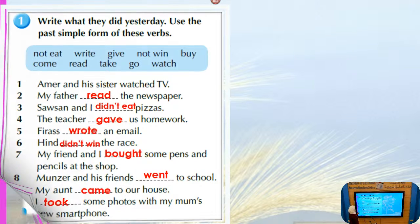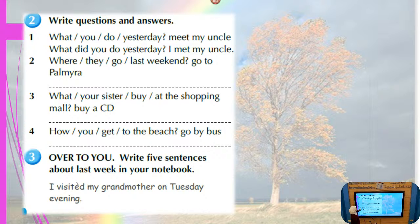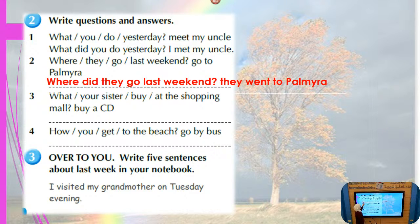Exercise 2: write questions and answers. We talked about negative form — we used 'didn't' plus verb one. What about question or interrogative form? We use 'did' plus subject then verb one. Remember to use verb one whenever you use 'did' — it's a common mistake. 'Where did they go last weekend?' — this is the question. The answer: 'They went to Palmyra' — the past of 'go' is 'went'.